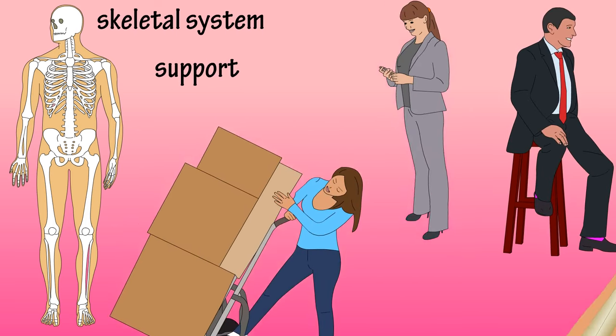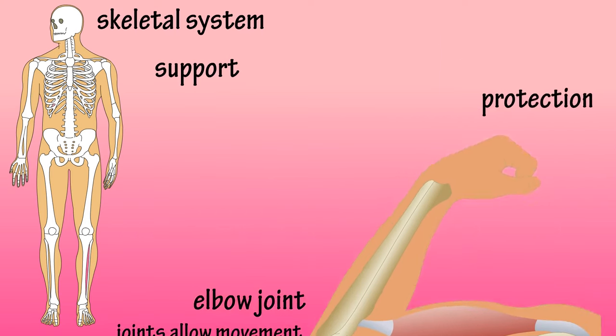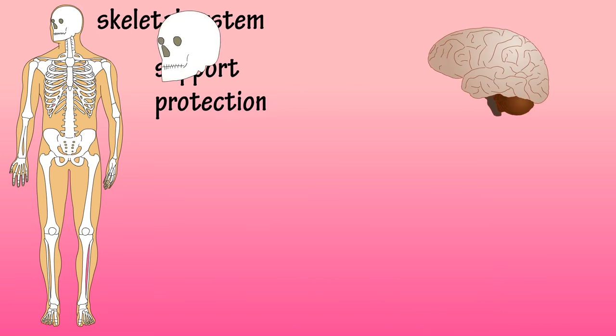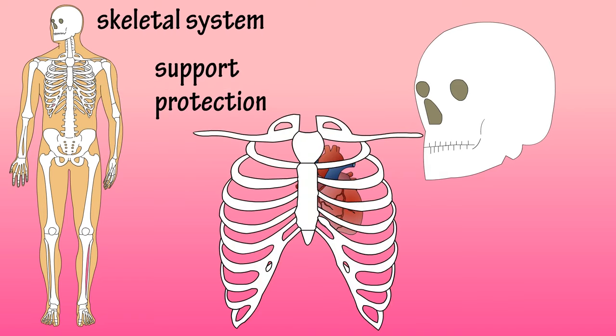Where bones meet, they form joints, most of which are flexible, allowing the body to move. The skeleton also provides protection to some organs, as the brain is protected by the skull, and the heart is protected by the ribcage.